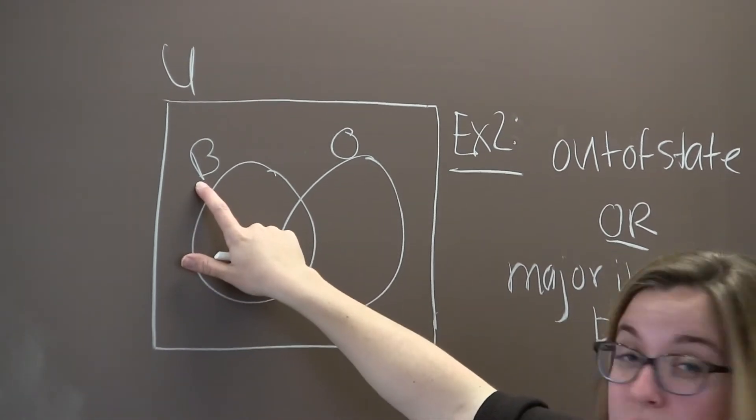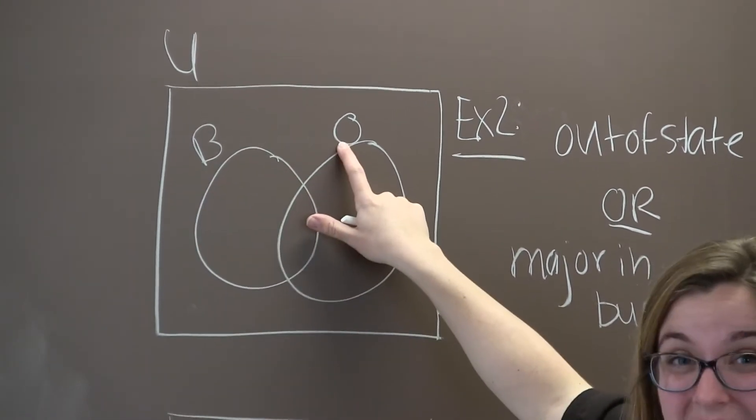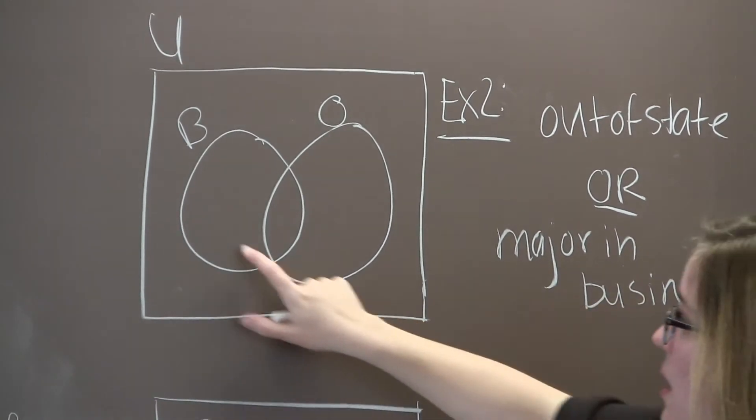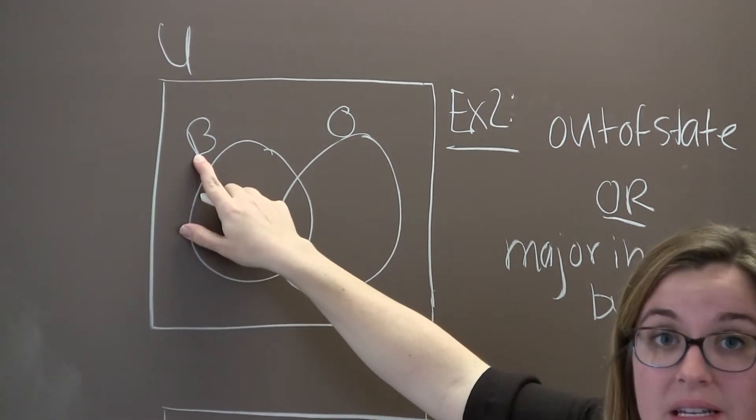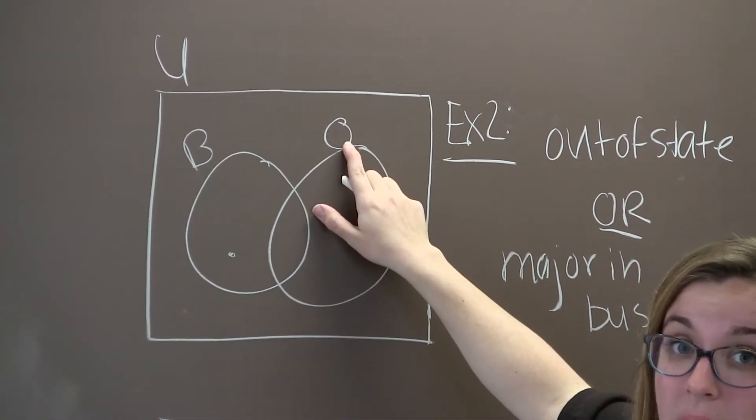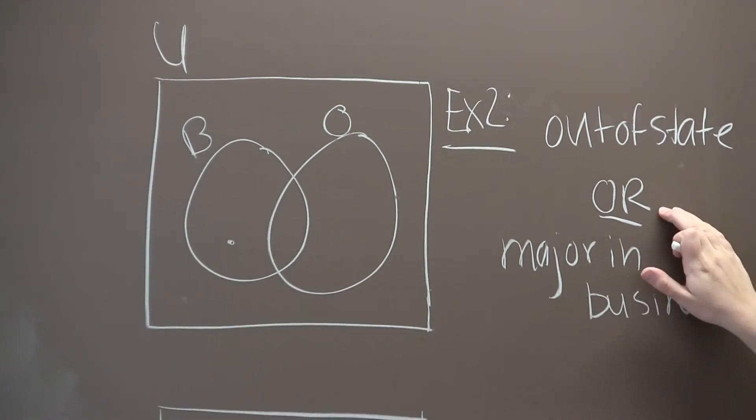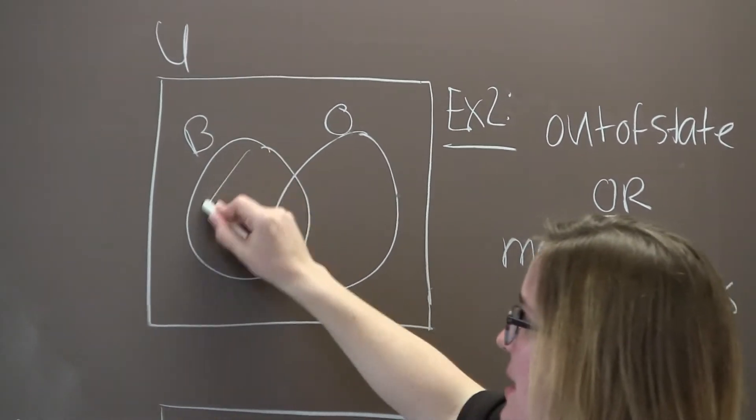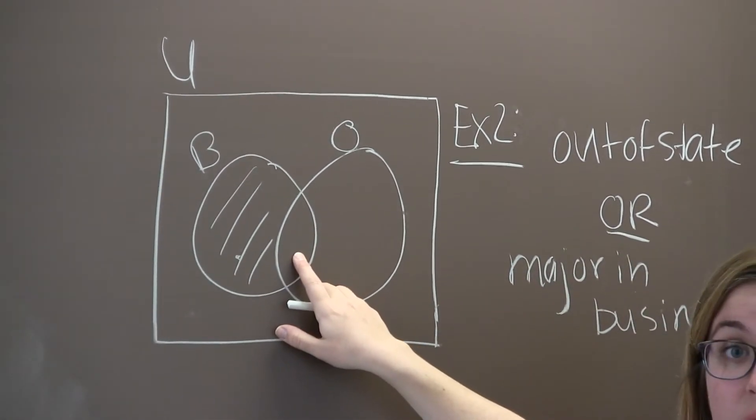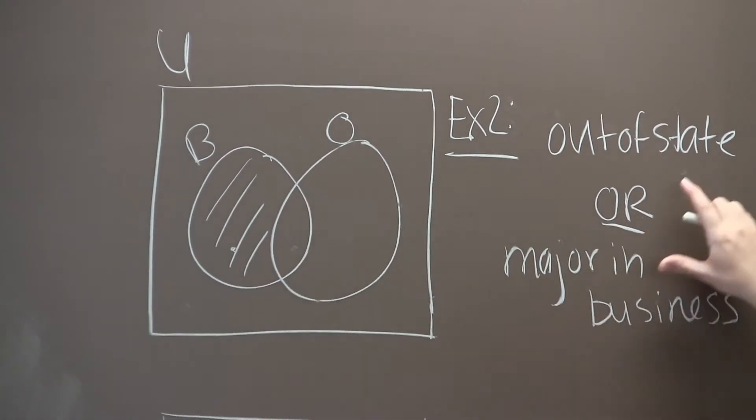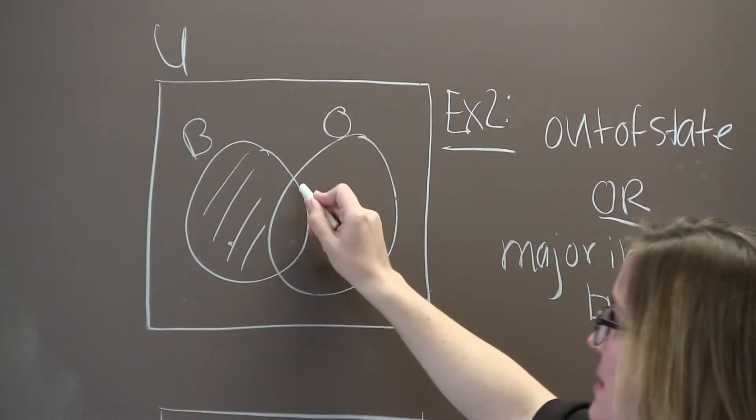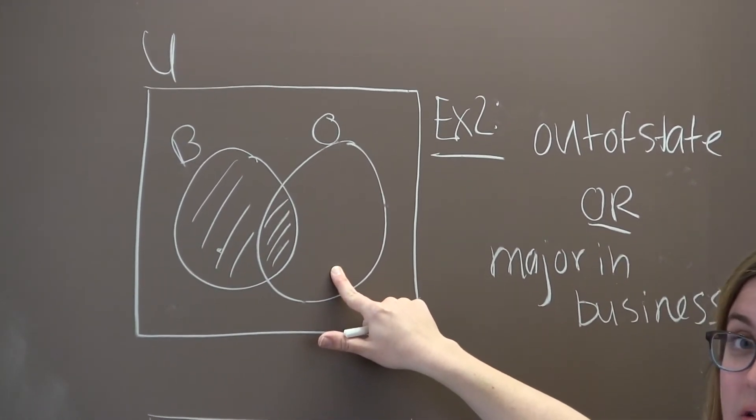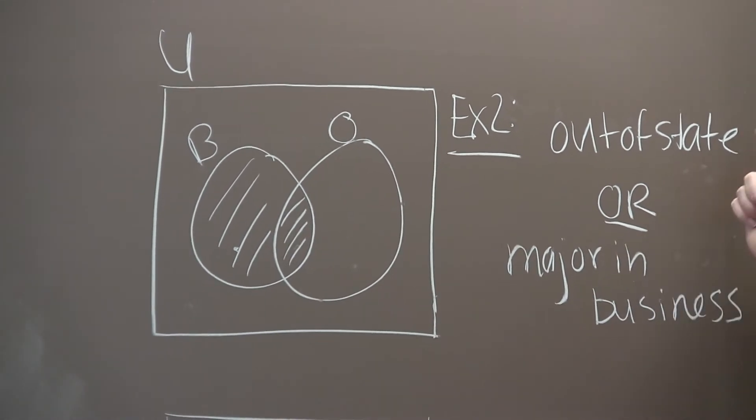This region out here is the set of people who don't want to major in business and don't live out of state, so they definitely don't satisfy either of these two conditions. If I live right here, then I want to major in business but I'm not from out of state, but that's okay because to satisfy this or condition you just have to satisfy one of these two things. So this region makes it in. This is the set of students who want to major in business and are from out of state, so it definitely satisfies at least one of these. So that makes it in. And this region right here is the set of out-of-state students who don't want to major in business. They satisfy this first condition, they make it in.